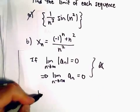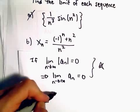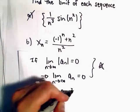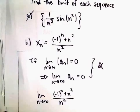The way that we're going to do this is we're going to take the limit as n goes to infinity of (-1)^n + n^2 all over n^2.